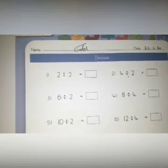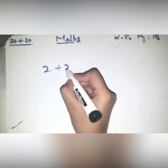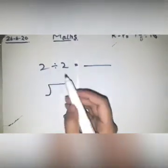So what will be the answer? To solve this question, you will draw the division symbol. This 2 is the dividend and this 2 is the divisor. The divisor goes here and the dividend goes here.